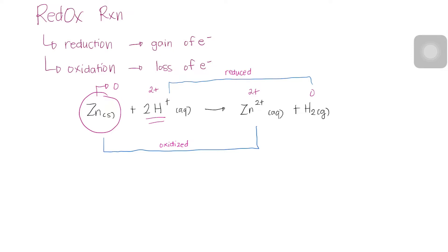Thus, this is an oxidation-reduction reaction, or a redox reaction. As the blue lines show, electrons are transferred from zinc atoms to hydrogen ions. In any redox reaction, both oxidation and reduction must occur. So if one substance is oxidized, another substance must then be reduced.